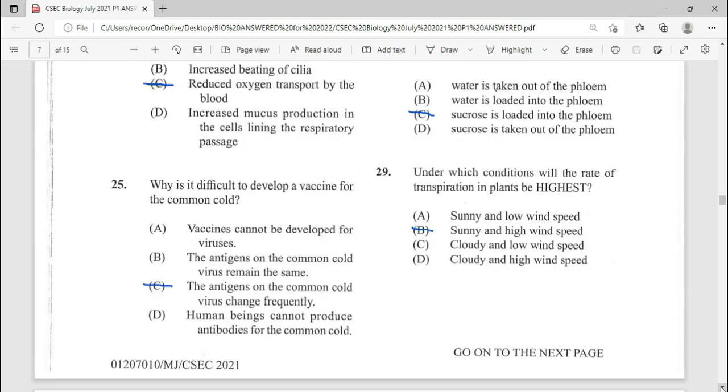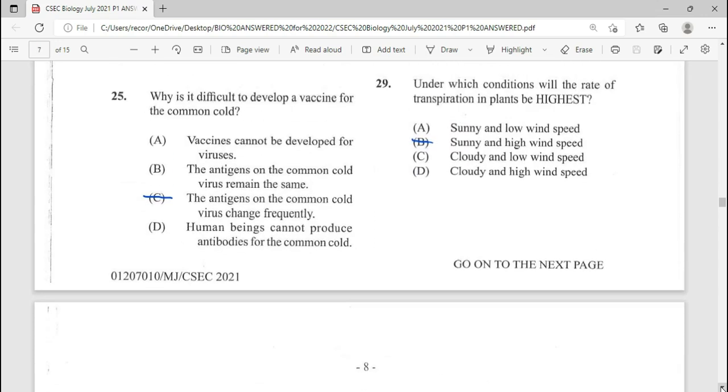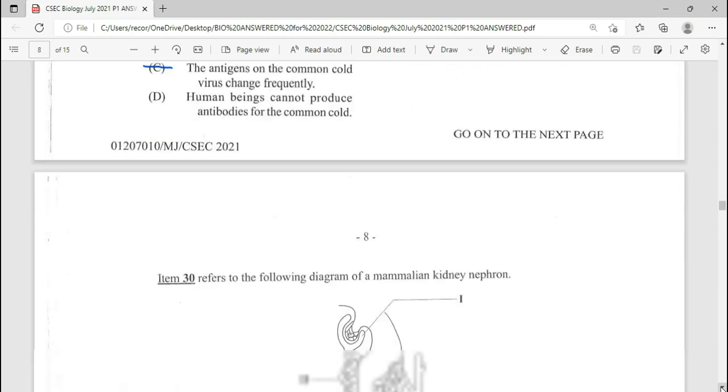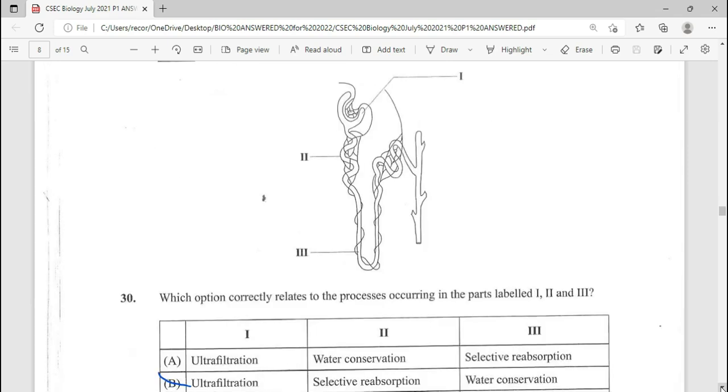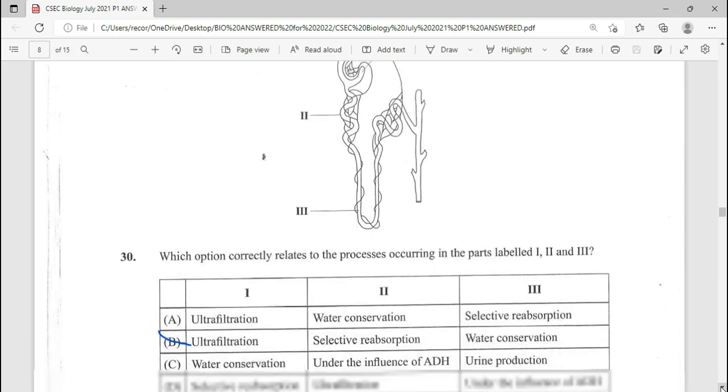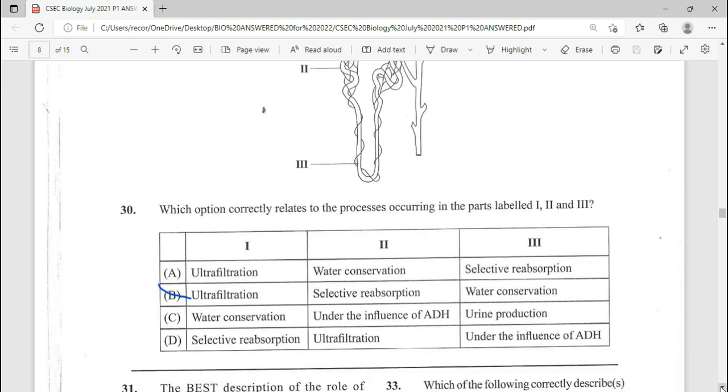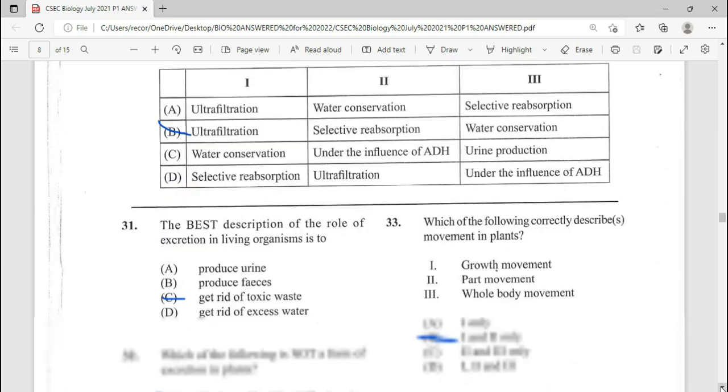29, under which condition will the rate of transpiration in plants be highest? Answer here being B for 29. And then we move on to item 30 that looks at the nephron. Item 30 refers to the following diagram of a mammalian kidney nephron, which of the following correctly relates to the process occurring in the parts labeled 1, 2, and 3. So our answer there being B, ultrafiltration, selective reabsorption, water conservation.